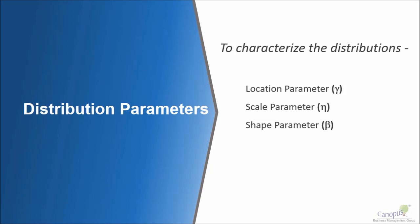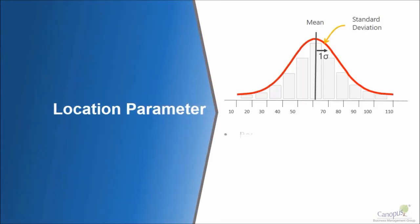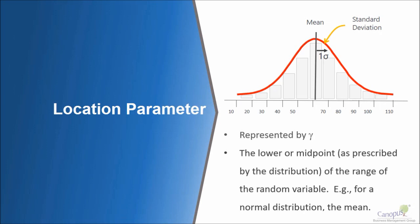The location parameter is represented by gamma, scale parameter represented by eta, and shape parameter represented by beta. Let's take these in detail and understand how to use them in our projects. For the location parameter, for simplicity I am taking a normal distribution.